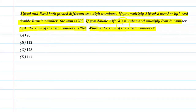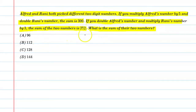If you double Alfred's number and multiply Rani's number by 3, then the sum is 252. So what will be the sum of their two numbers?